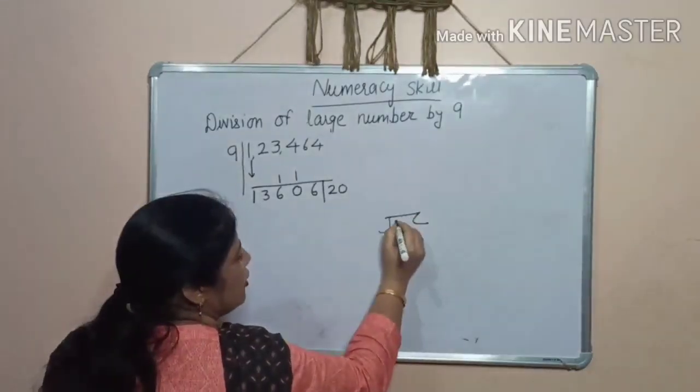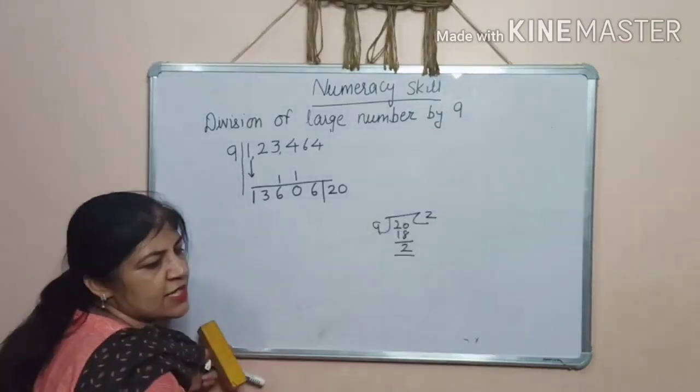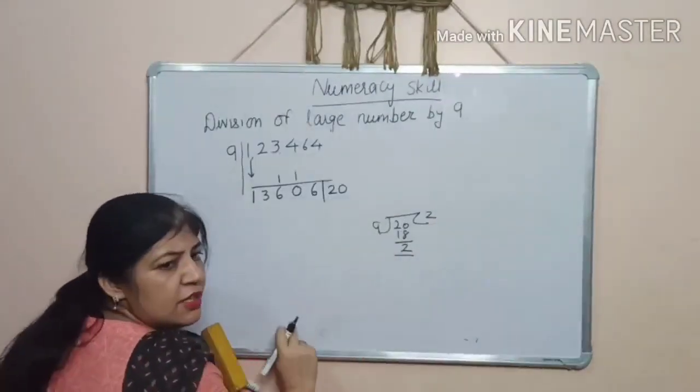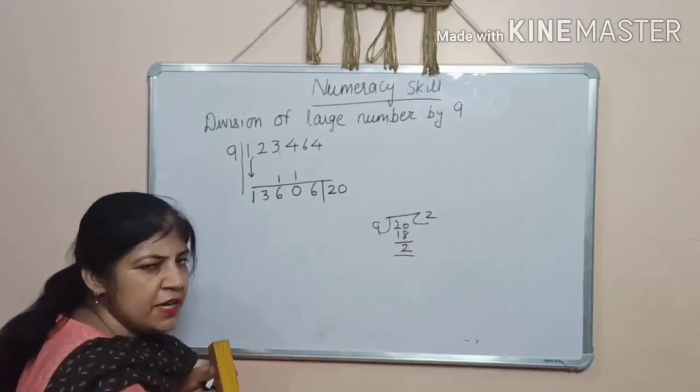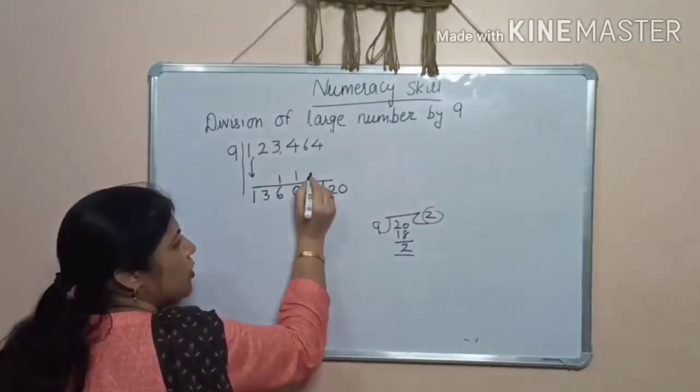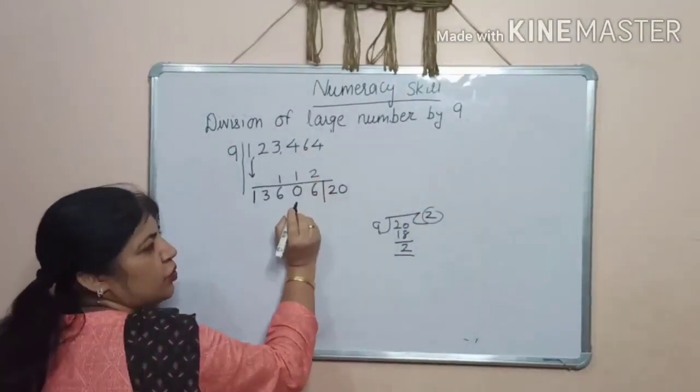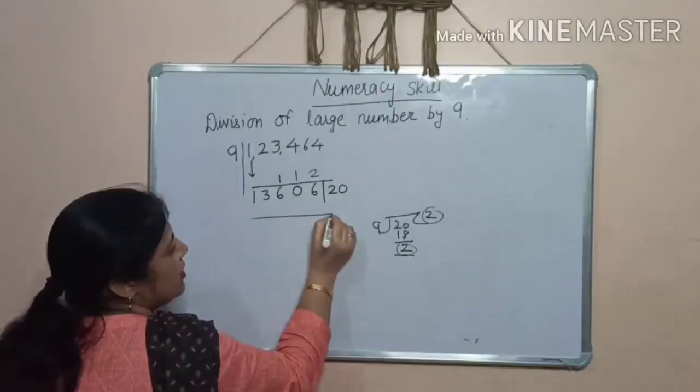20 cannot be the remainder because it is greater than the divisor. So, divide 20 by 9. You will get 2 as quotient and 2 as remainder. So, we will add this quotient to here. Okay?